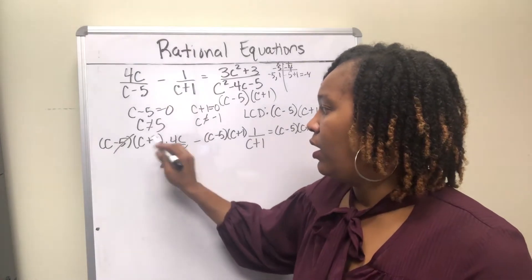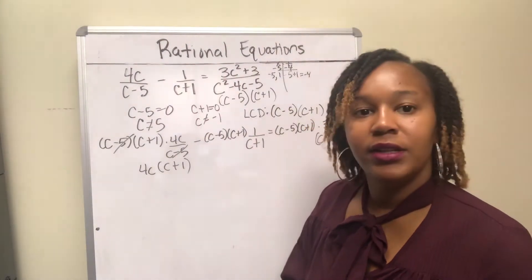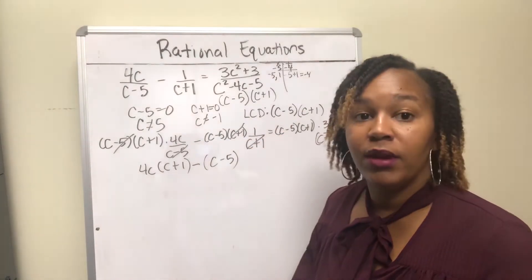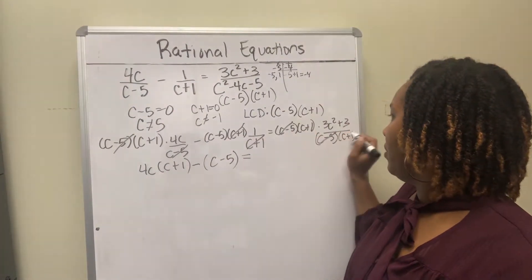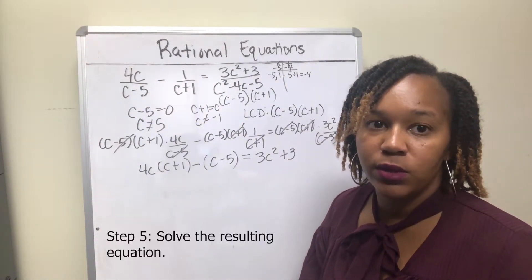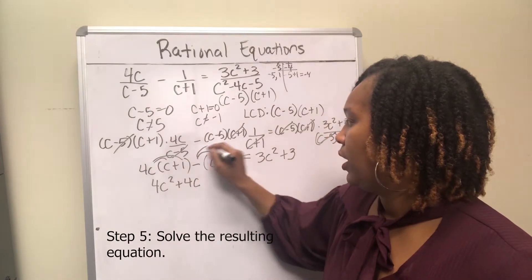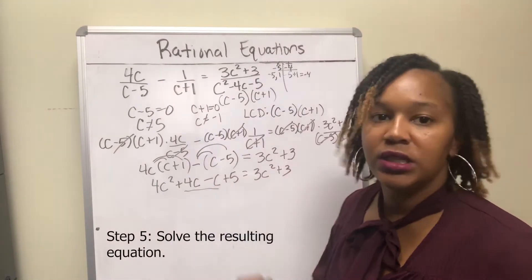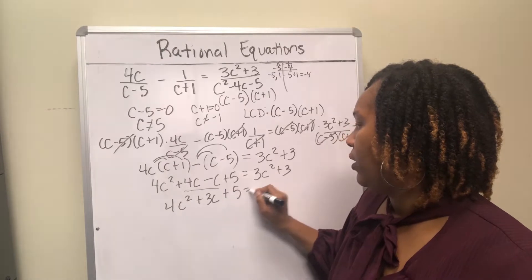Cancel the factors. The c minus 5 cancels, leaving (c plus 1) times 4c, written as 4c(c plus 1). The c plus 1 cancels, leaving c minus 5 times 1, written as (c minus 5) — kept in parentheses because of the minus sign, which will distribute to both terms. Both the c minus 5 and c plus 1 cancel in the last term, leaving 3c squared plus 3. Distribute 4c to get 4c squared plus 4c. Distribute the negative to get minus c plus 5. Combine like terms 4c minus c to get 4c squared plus 3c plus 5 equals 3c squared plus 3.